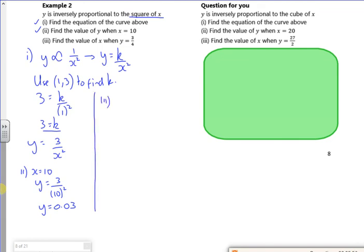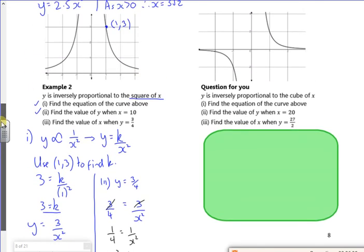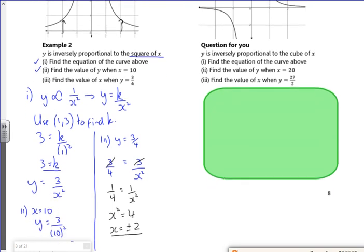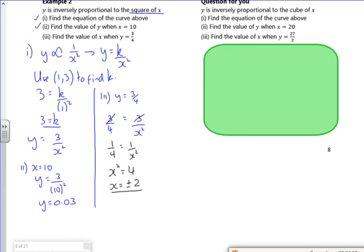Part 3, find the value of x when y is 3 quarters. So I've got 3 quarters is 3 over x squared. The 3s will cancel. And I've got a quarter is 1 over x squared. Do a bit of cross-multiplying. x squared is 4. x is plus or minus 2. Now if you look at the graph, I can have an x is 2 and I can have an x is minus 2. So I've got a plus or minus 2.